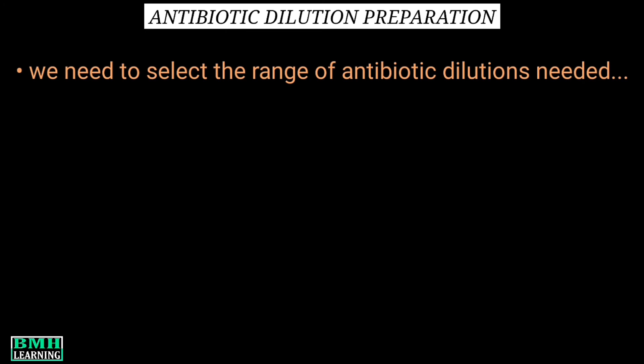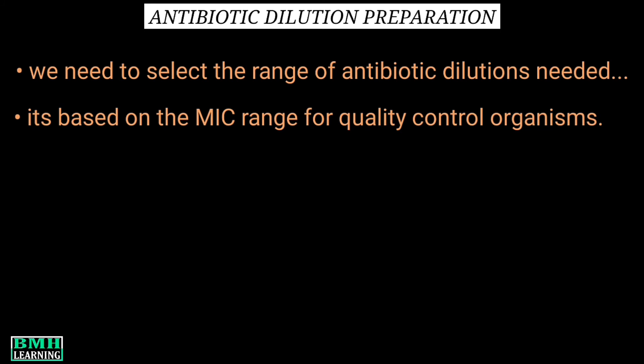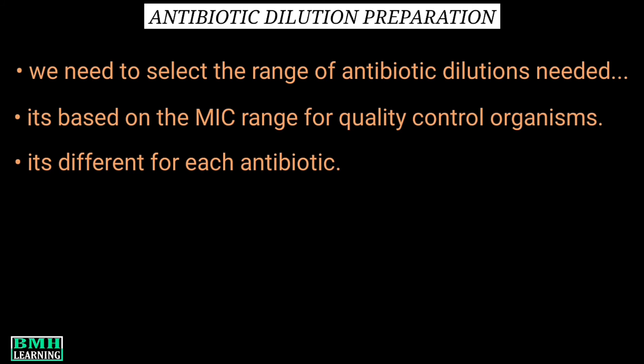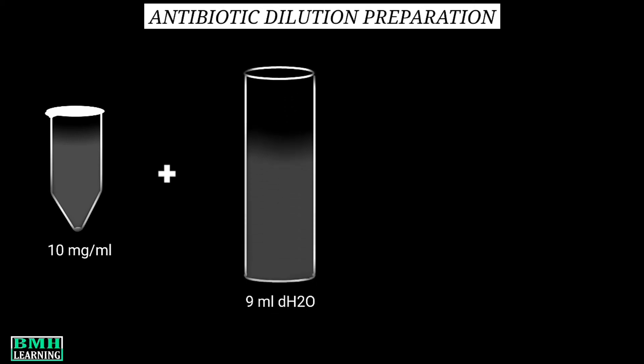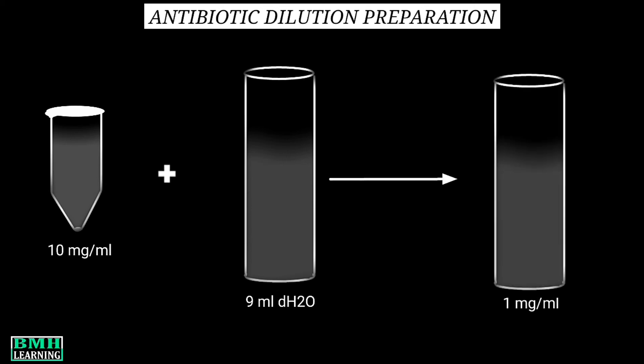Next is the preparation of antibiotic dilutions. You need to select the range of antibiotic dilutions needed, and this is based on the MIC range for quality control organisms — so it will be different for each antibiotic. Using one aliquot at 10 mg per ml, we transfer 1 ml into a tube containing 9 ml of distilled water, giving a concentration of 1 mg per ml. Generally, the required dilutions are in the range of a few micrograms per ml.